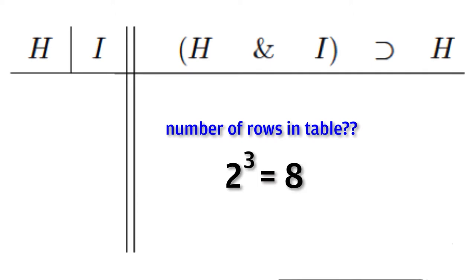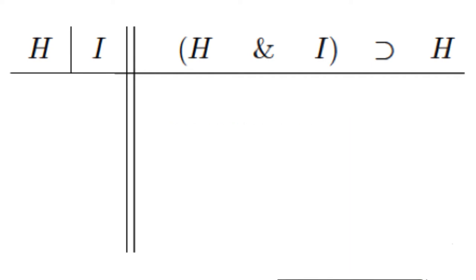For a truth table with three variables, we would raise base two to the third power, or two times two times two, thereby requiring a truth table with eight rows. If we had five variables, our table would need 32 rows, two to the fifth power. Our example sentence has two variables, H and I, so we have to use a four row truth table.